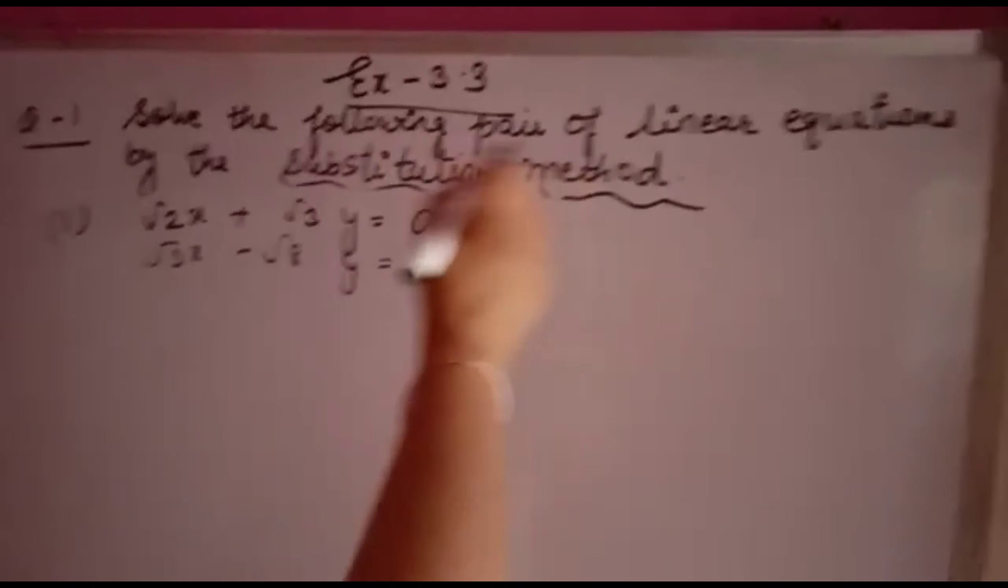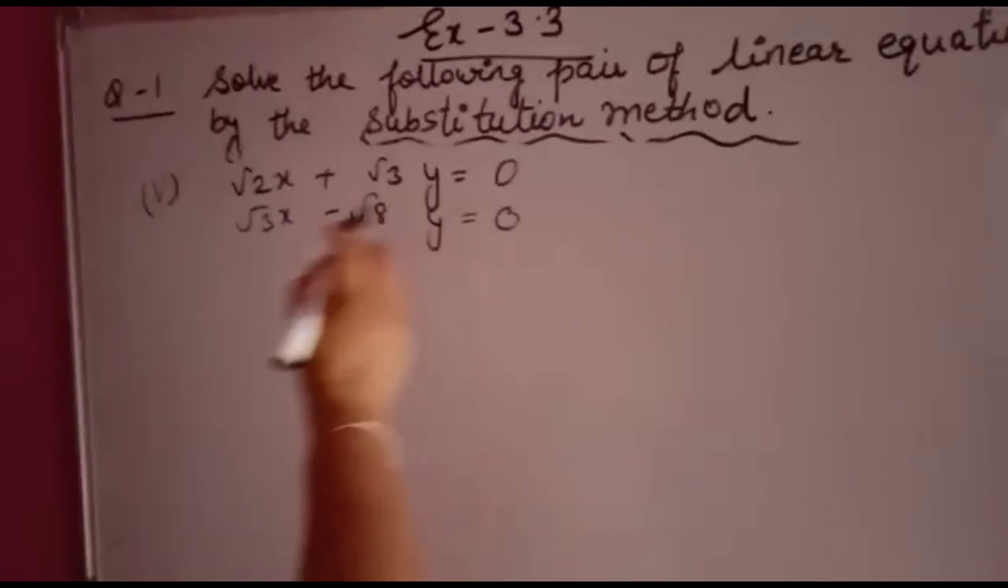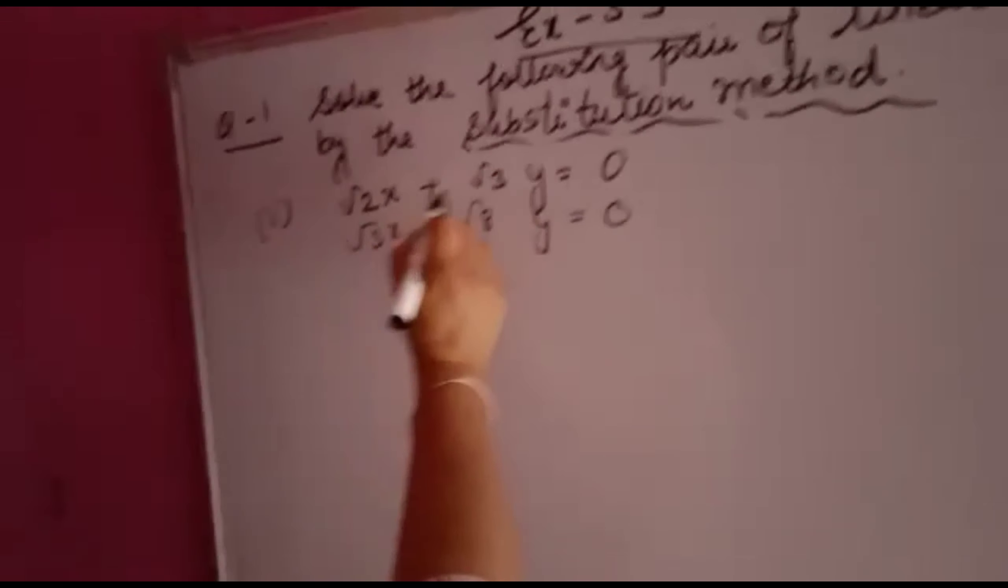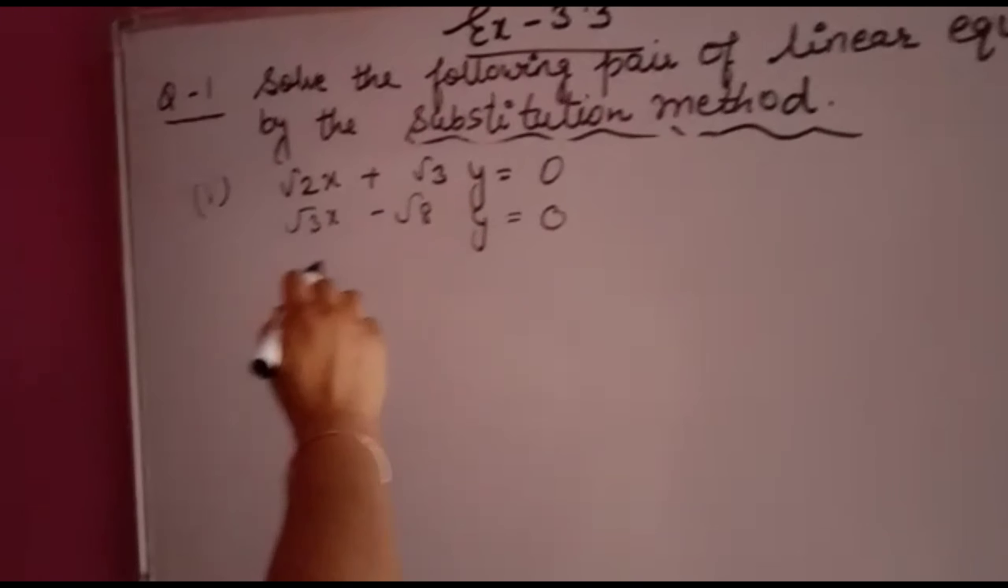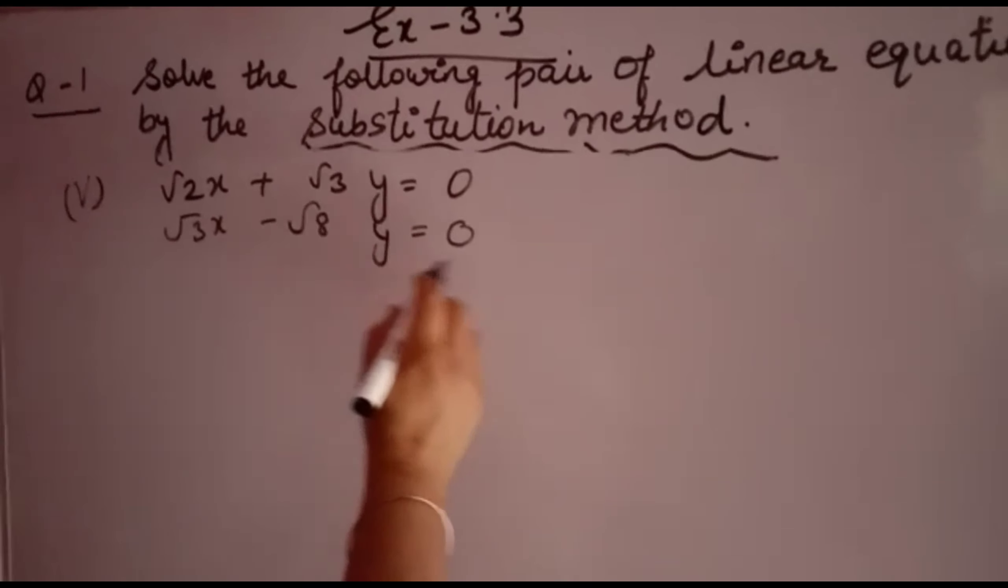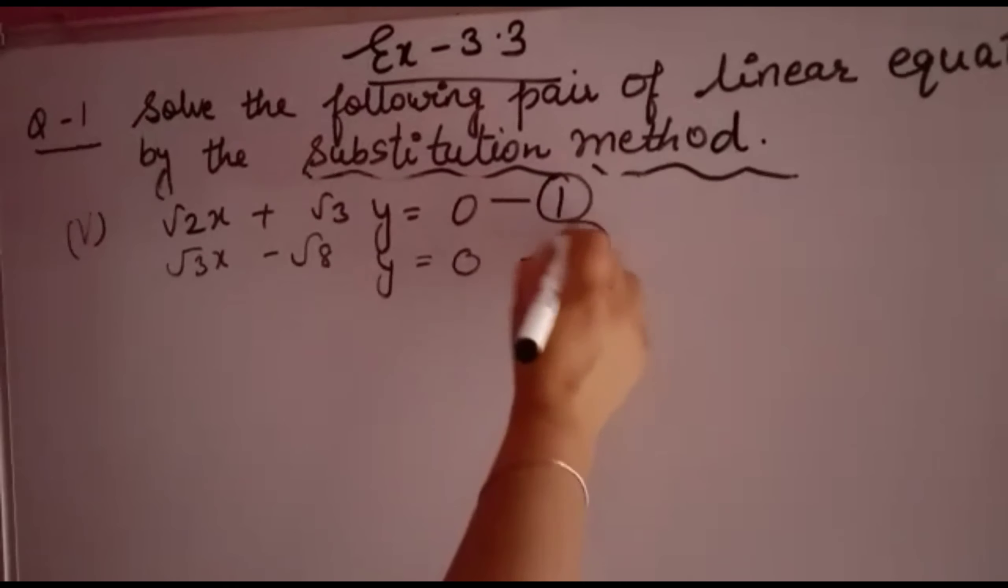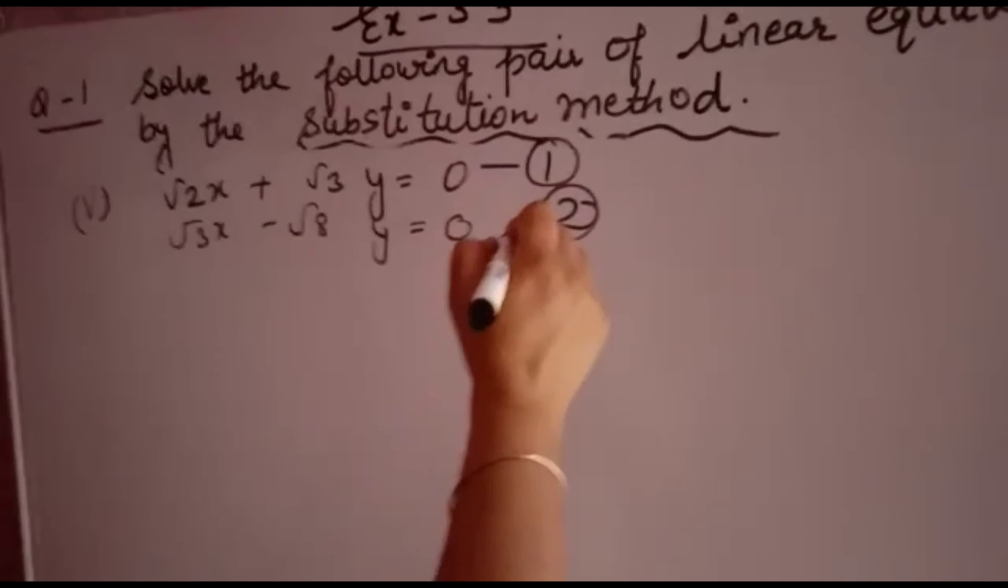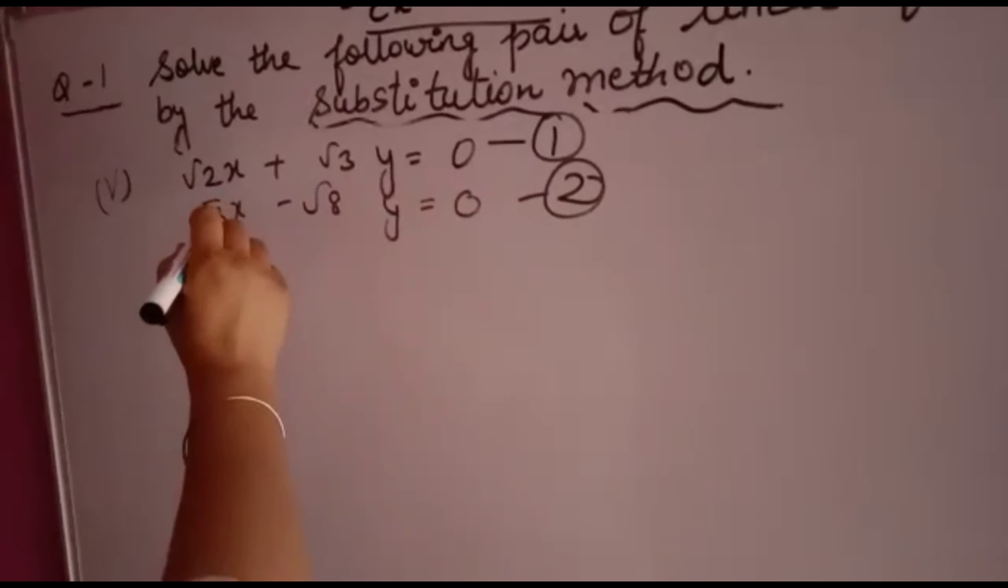Question number 1: Solve the following pair of linear equations by the substitution method. The equations are √2x + √3y = 0 (equation 1) and √3x - √8y = 0 (equation 2). You have to solve this pair of linear equations with two variables.